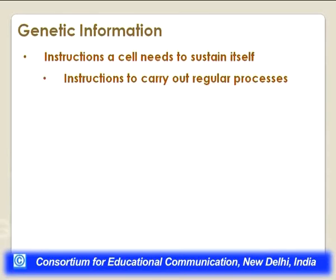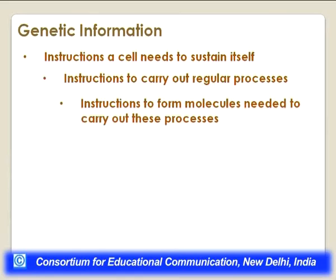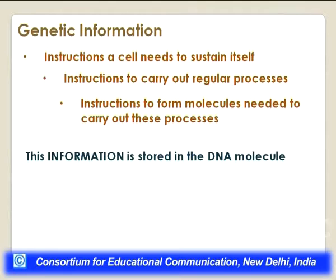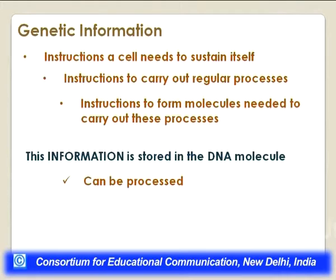Genetic information is the instructions a cell needs to sustain itself — the instructions to carry out regular cellular processes and to form the molecules needed for those processes. This information is stored in the DNA molecule. It can be processed to form effector molecules, or transmitted from one generation to another, which is the prime function of DNA.